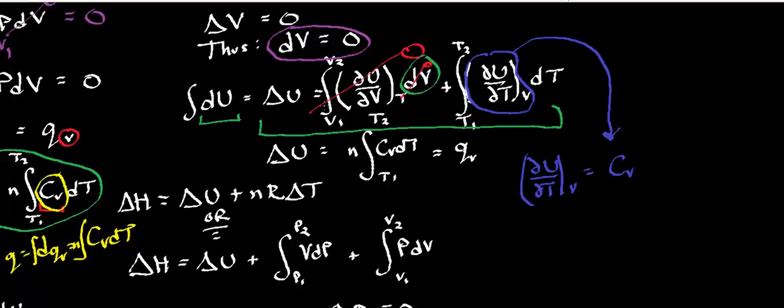So when this whole first integral cancels out, my delta U is just equal to this integral right there, n times the integral of Cv dT from T1 to T2, and that's essentially just the heat. When you multiply heat capacity times temperature, in integral form, that's just the heat. And since we're at constant volume, it's Q at constant volume. And that's why those two things are equivalent to each other. That's why the heat is equal to the internal energy.